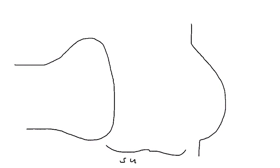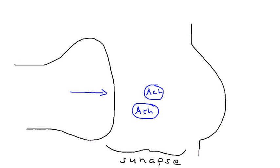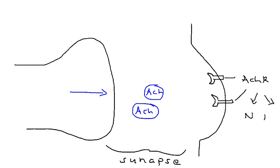Let's draw a diagram to illustrate how this works. We have a pre-synapse, a post-synapse, and in between, the synapse itself. Acetylcholine is released from the presynaptic terminal — represented as little circles. On the post-synaptic terminal you have receptors, AChR, that catch those molecules. There are two types of receptors: nicotinic and muscarinic. In the synapse, you also have the enzyme acetylcholine esterase.